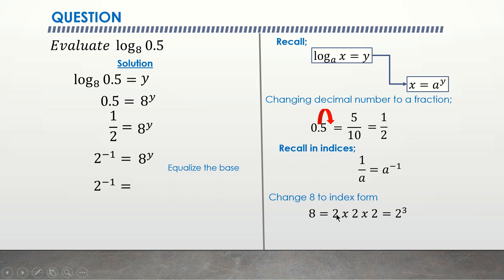So I bring this down. 2 raised to the power, 2 raised to the power 3, 3 times 1 is 3y. So we now have 2 raised to power 3y.